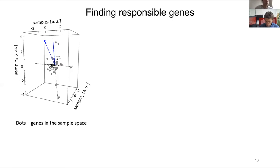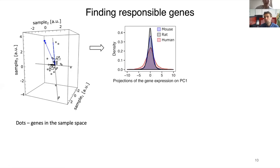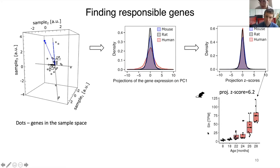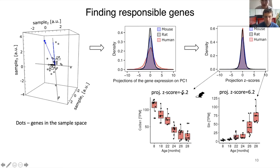I applied this procedure for all organisms, operating in the space of all available samples and all expressed genes, and collected projection values depicted as a distribution plot. To standardize projection values across species, I calculated projection z-scores. As an example, sarcolysin from the mouse dataset has a high projection z-score with increasing expression during aging, while another gene has a very low negative projection z-score with decreasing expression — both contributing significantly to muscle aging in mouse.